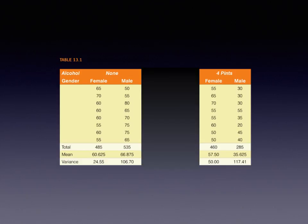Let's talk about the dependent variable here — what's being measured. Here in another classic Andy Field example, the dependent variable is an attractiveness rating. To be clear about who's being rated: it's not the attractiveness of the participants. It's the attractiveness, rated by independent judges, of the people who the participants were chatting up after they drank either no alcohol or four pints of alcohol. So the dependent variable is the attractiveness rating of the people the participants were talking to.